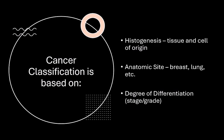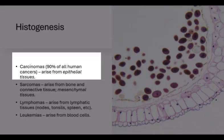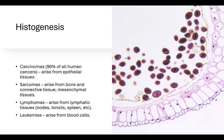Cancer classification is based upon histogenesis, anatomic site, and degree of differentiation. Carcinomas, which represent 90% of all human cancers, arise from epithelial tissues. Sarcomas arise from bone and connective tissue — mesenchymal tissues. Lymphomas arise from lymphatic tissues including nodes, tonsils, spleen, etc. Leukemias arise from blood cells.